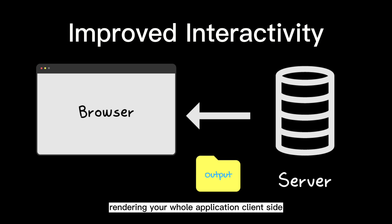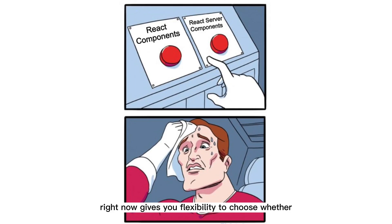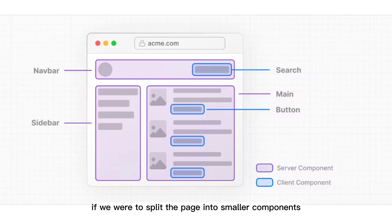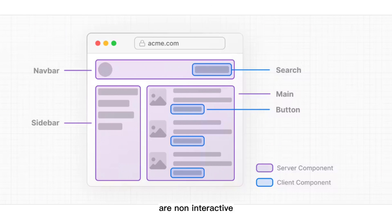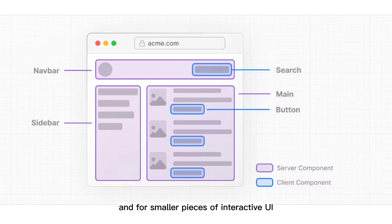Instead of React rendering your whole application client-side, such as in the case of single-page applications, React now gives you the flexibility to choose whether to render your components based on their purpose. If we split the page into smaller components, you'll notice the majority are non-interactive and can be rendered on the server as server components. And for smaller pieces of interactive UI, that is where client components come in.